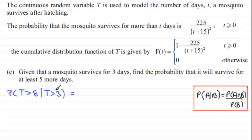That's the same as the probability that T is greater than eight—that will satisfy both conditions, if you like A and B. Then we divide this by the probability of the given event. In this case, the given event is the probability that T is greater than three.